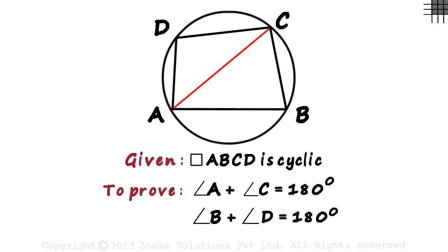If we join any one diagonal, we get two triangles, but these two triangles also don't tell us anything. So in our construction, let us join both the diagonals AC and BD.